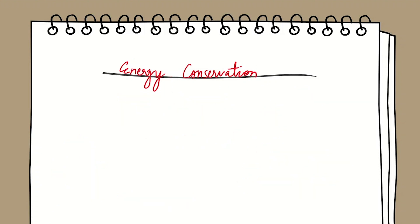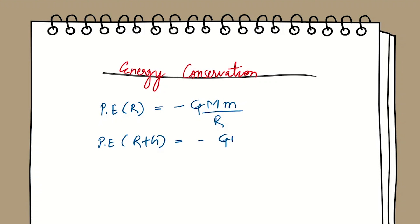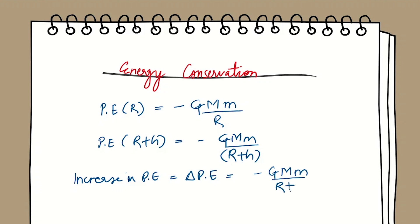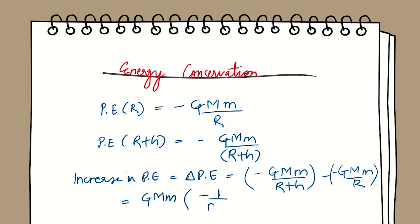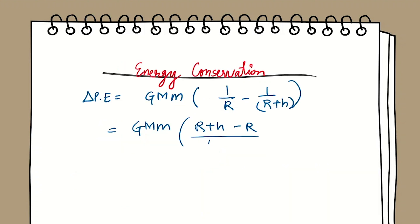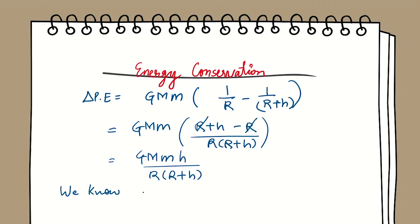The potential energy at radius r is −GMm/r, and at r + h it is −GMm/(r + h). The increase in potential energy ΔPE equals −GMm/(r + h) − (−GMm/r). Taking GMm common, we get GMm[−1/(r+h) + 1/r], which simplifies to GMm · h / [r(r + h)].